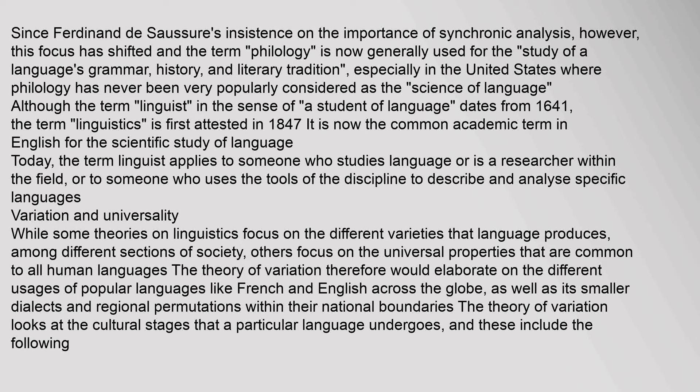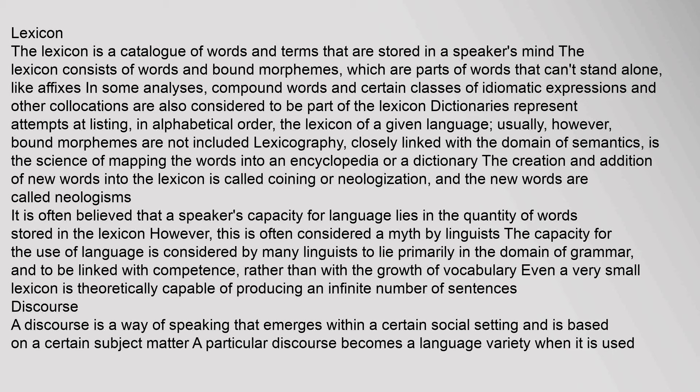The lexicon is a catalogue of words and terms stored in a speaker's mind. It consists of words and bound morphemes — parts of words that can't stand alone, like affixes. Compound words and certain classes of idiomatic expressions and collocations are also considered part of the lexicon. Dictionaries represent attempts at listing the lexicon of a given language alphabetically. Lexicography, closely linked with semantics, is the science of mapping words into an encyclopedia or dictionary. The creation of new words is called coining or neologization. Many linguists consider that the capacity for language lies primarily in the domain of grammar rather than in the size of the lexicon.